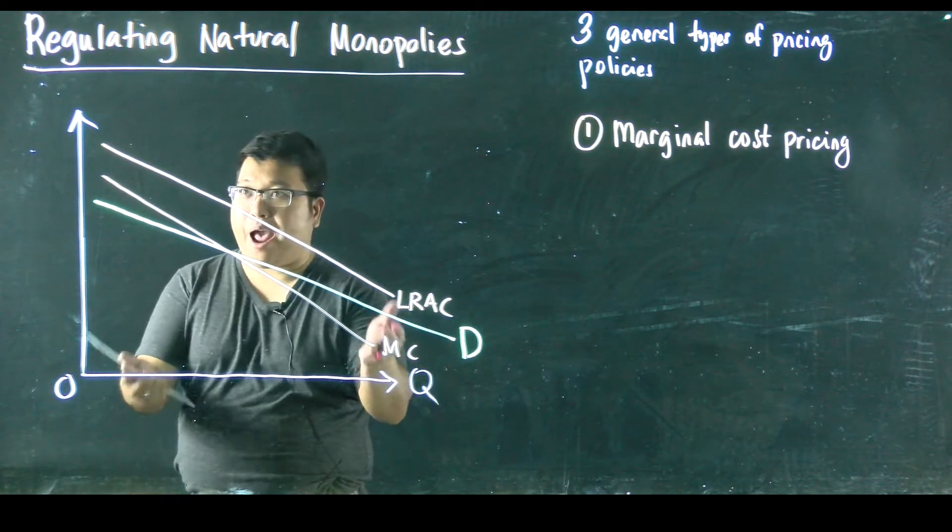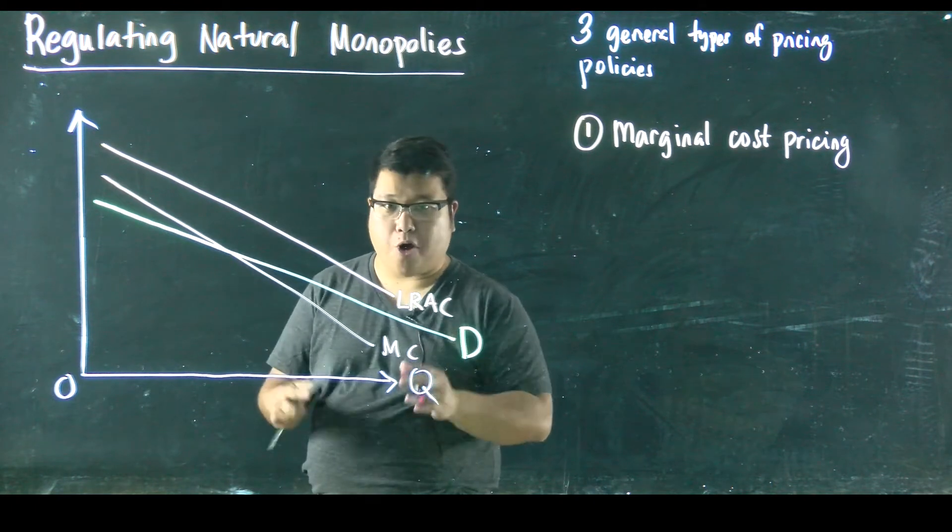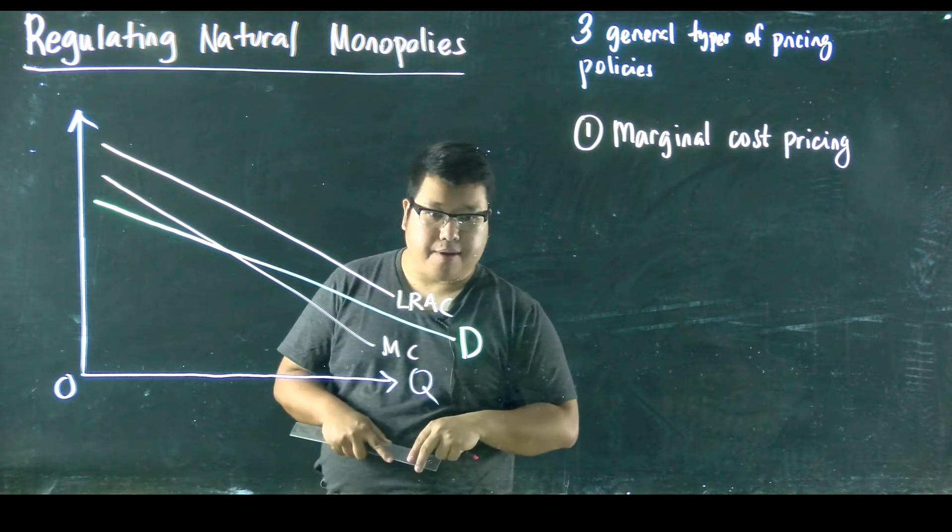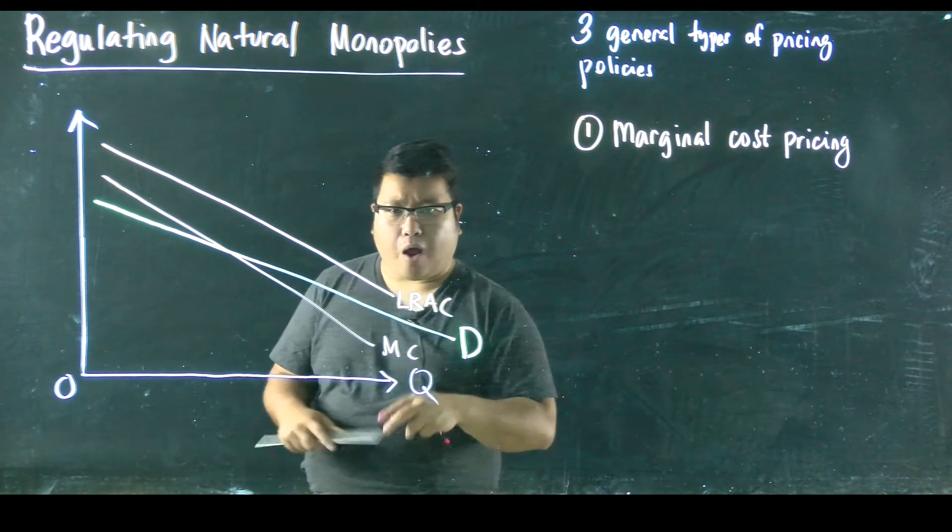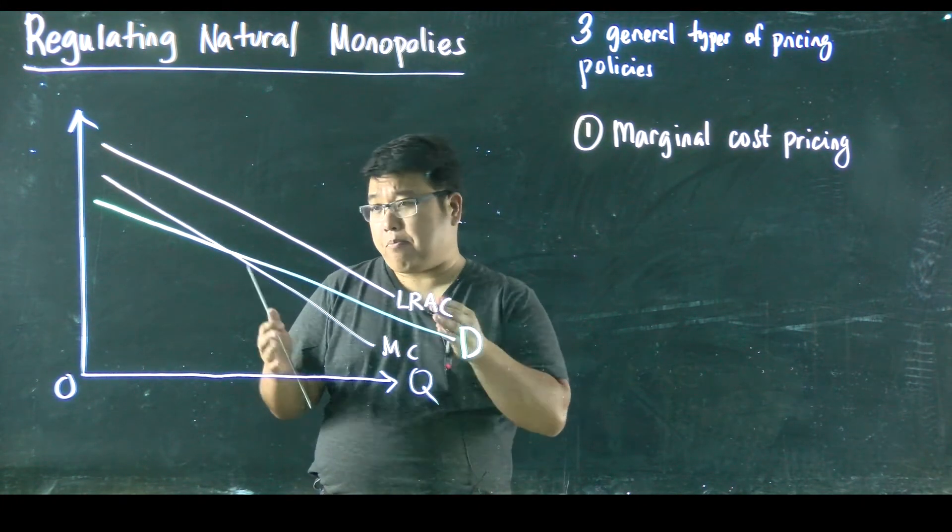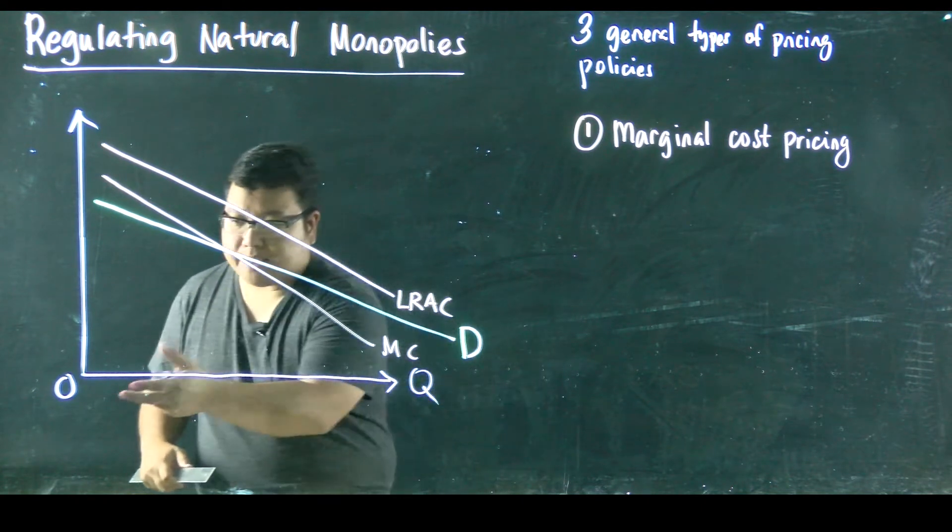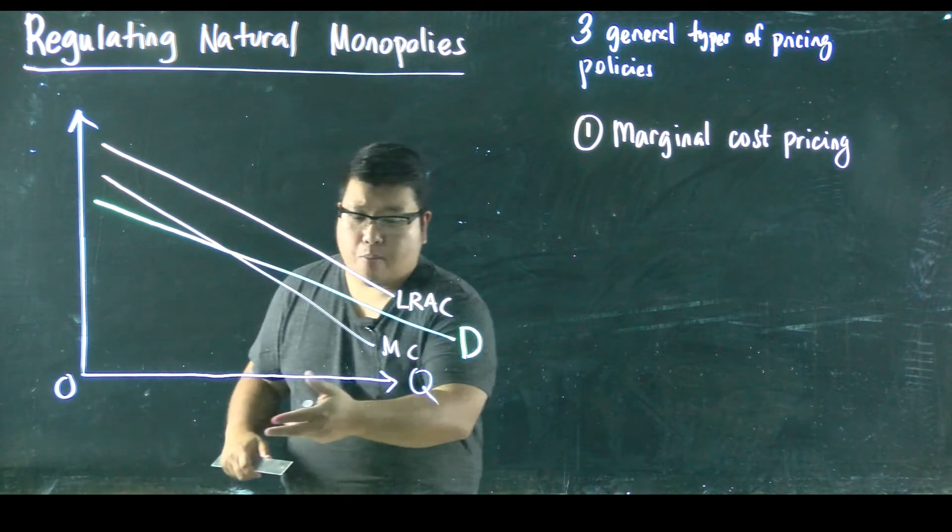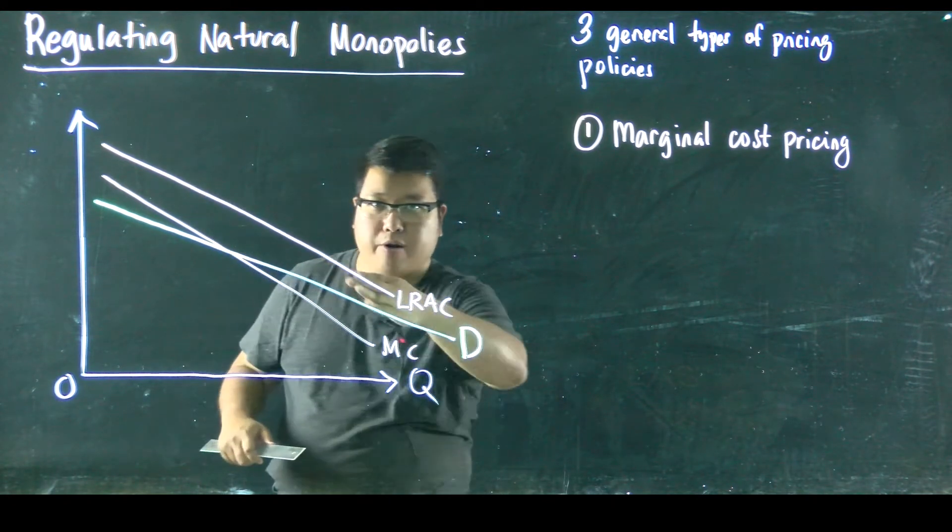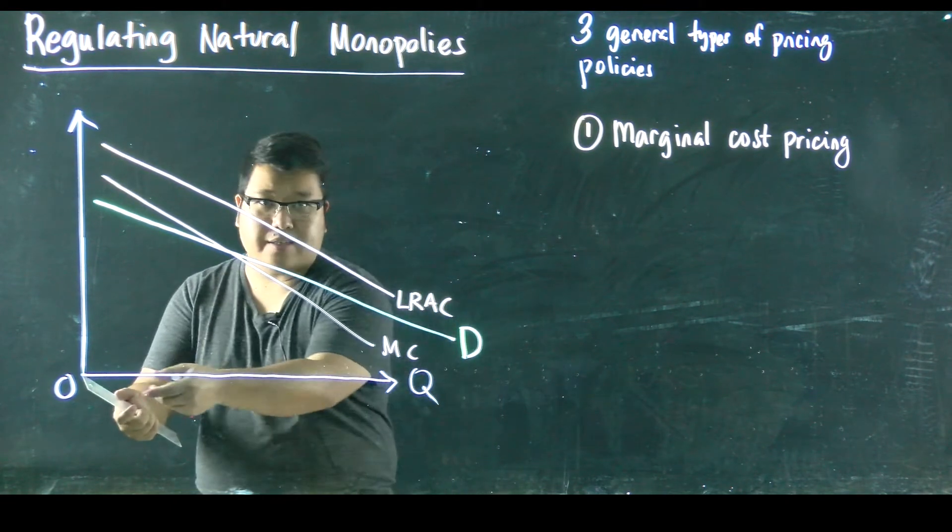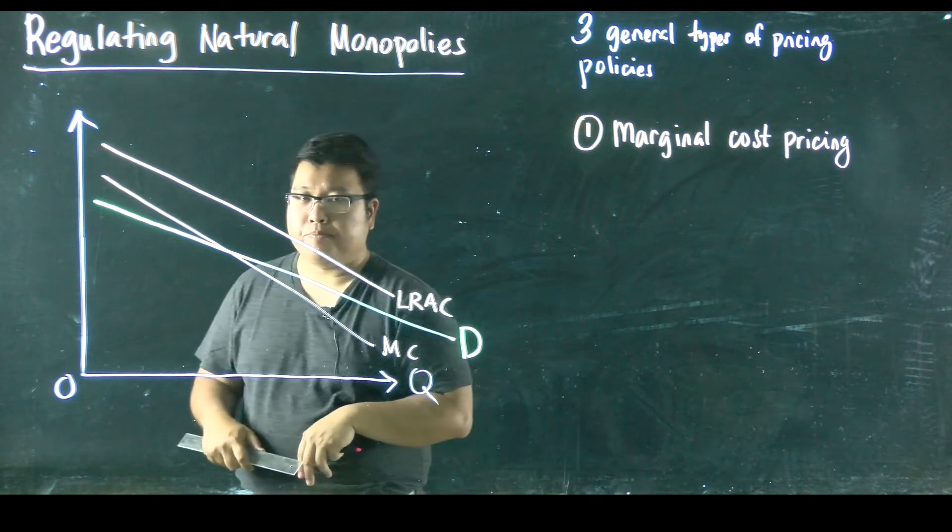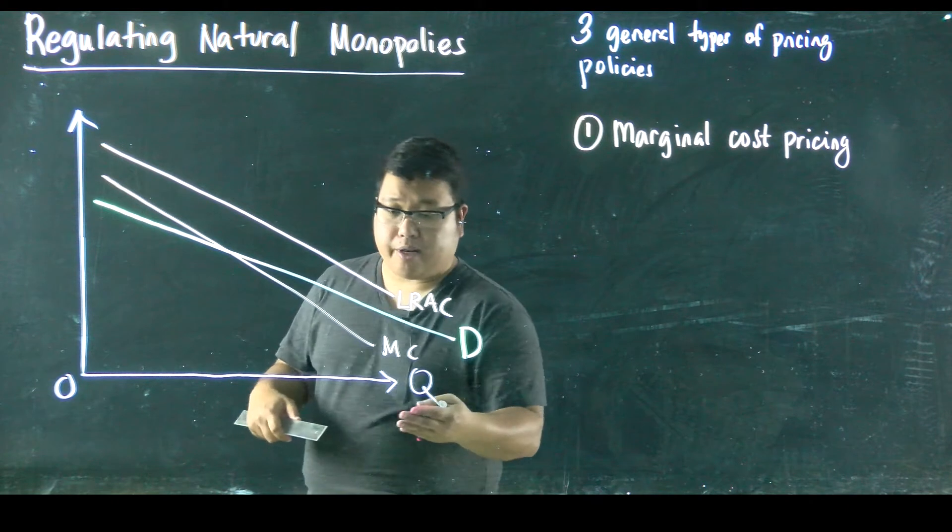All right, my friends, so we have here our graph for our natural monopoly where we have long run average cost, marginal cost and demand. What we see here, too, is that our long run average cost is downwards sloping as Q increases. This is specific for a natural monopoly. As the monopolies produce more and more of these goods, what happens is that the long run average cost for this firm becomes smaller and smaller and smaller because as it increases its scale, it becomes more efficient in producing this good. That's why it's a natural monopoly. It's efficient in producing this good in large quantities.